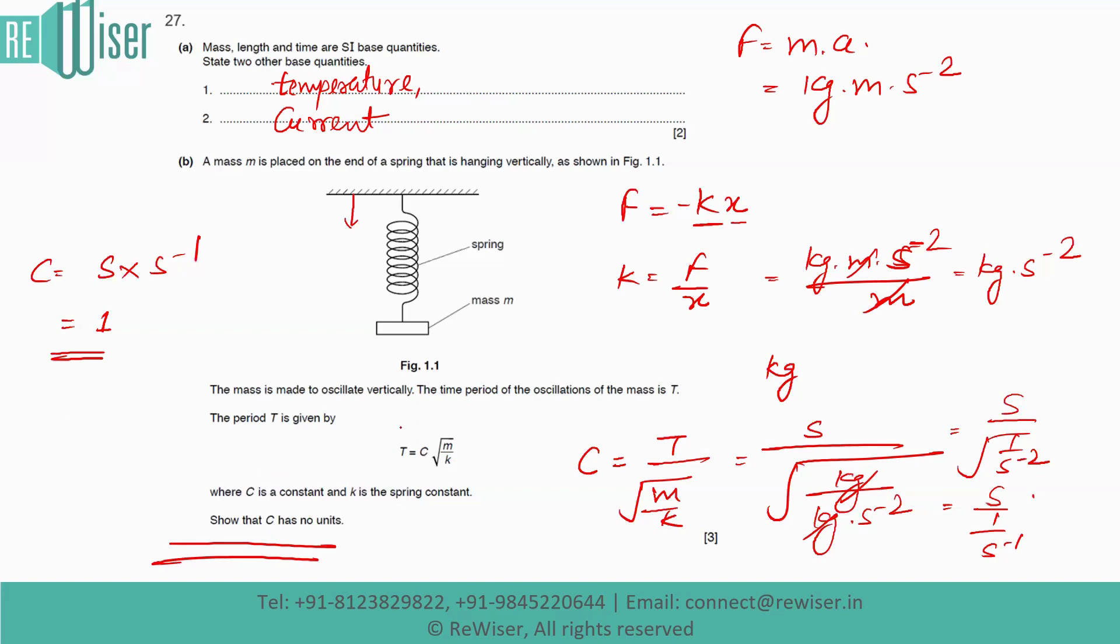In another way we can also do it like that: T has units of second, and √(M/K) has units of also second. So both units LHS and RHS have the units of seconds. That means they will have no units.